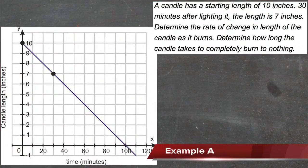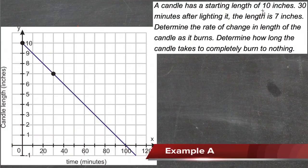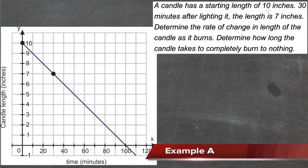Here we have a word problem dealing with the slope of a line. It says that we have a candle with a starting length of 10 inches, and 30 minutes after lighting it, the length is 7 inches.